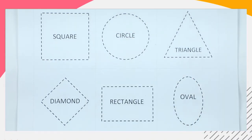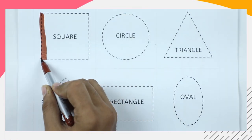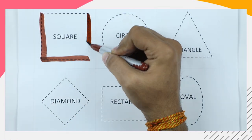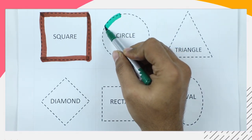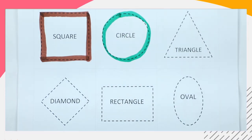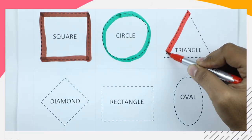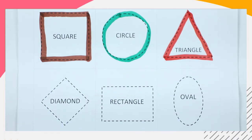It's a square — we draw a square with brown color. Square! It's a circle, circle with green color. Round circle!